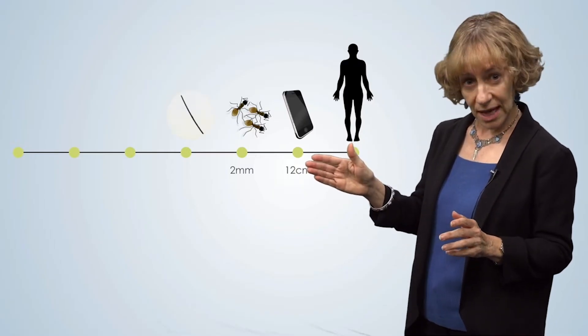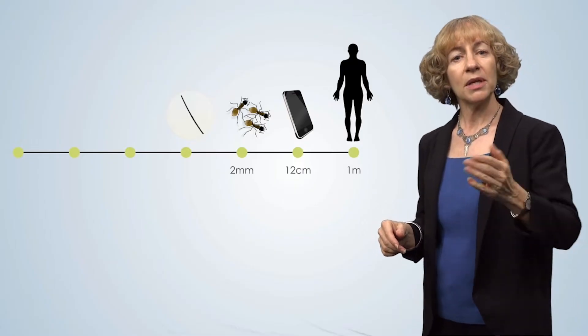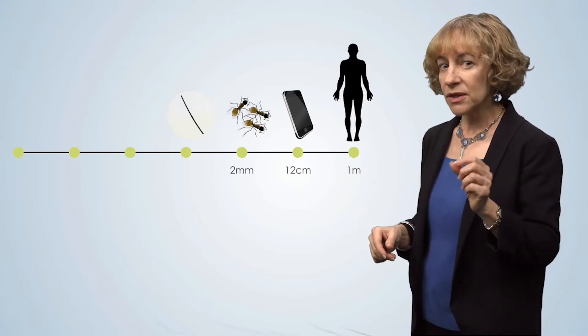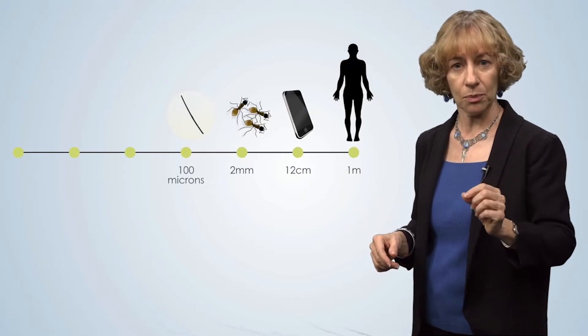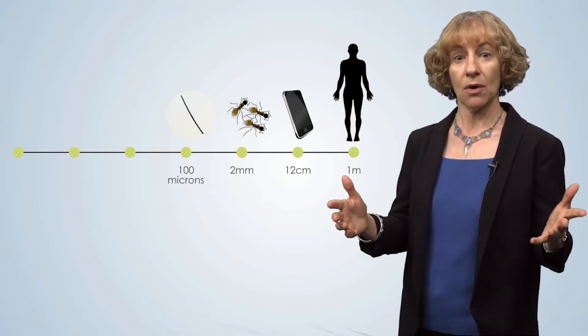Continuing on to the left on the scale bar are even smaller objects. We have a human hair, for example, as seen under an optical or light microscope. The width of the human hair is 0.1 millimeters, or 100 micrometers. In the lingo of the nanoworld, we call micrometers microns.